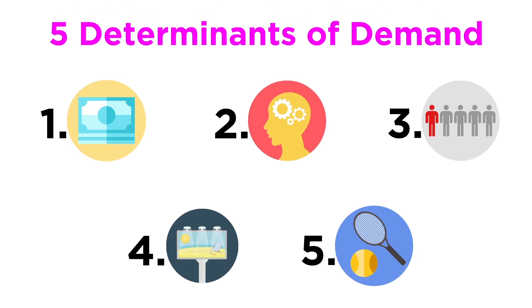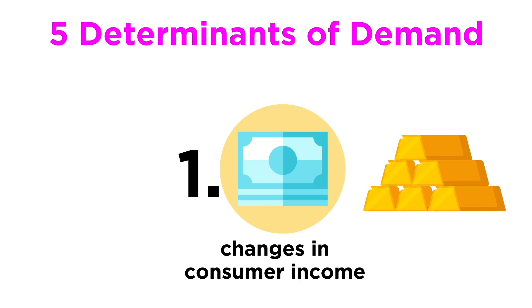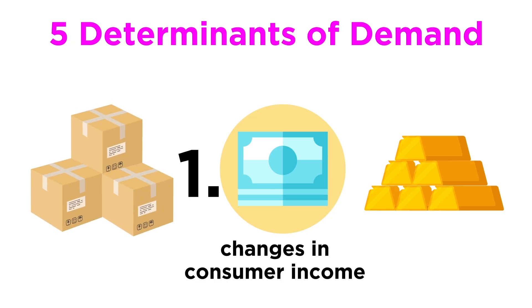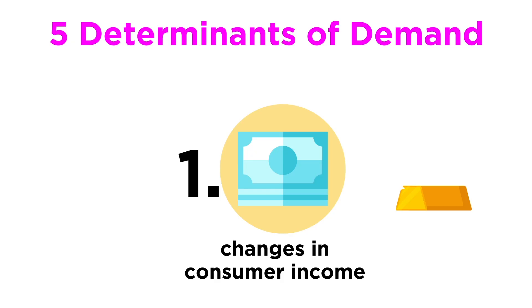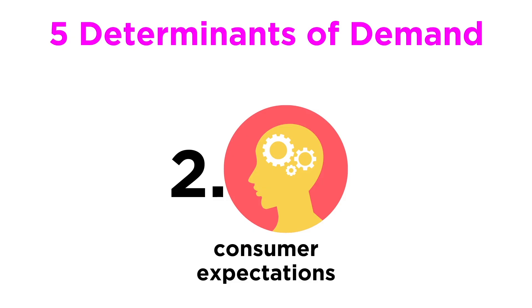Next, let's examine changes in demand. Assuming all other factors don't change, here are the five determinants of demand. Number one: changes in a consumer's income. The more money consumers make, the more they will demand goods and services, and the less money they make, the less they will demand. Number two: consumer expectations. Our expectations, whether they are hopes or concerns, can affect our demand for certain goods and services today.